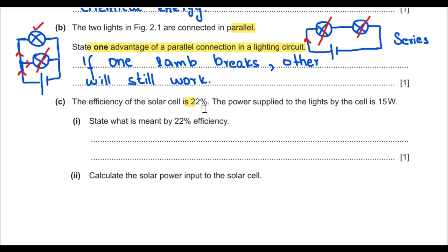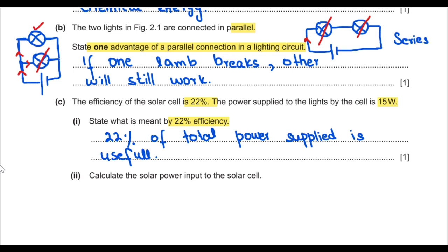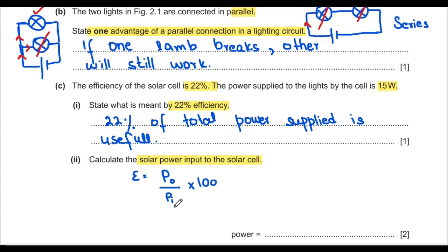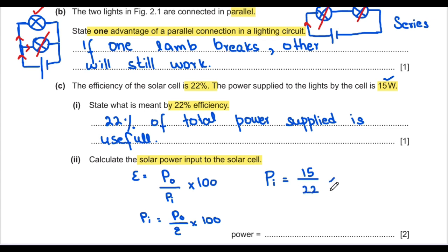Part c: the efficiency of the solar lamp is 22% and the power supplied to the light by the cell is 15 watts. 22% efficiency means 22% of total power supplied is useful output and the rest is wasted. To calculate solar power input: power input = power output / efficiency × 100 = 15 / 22 × 100 = 68 watts.